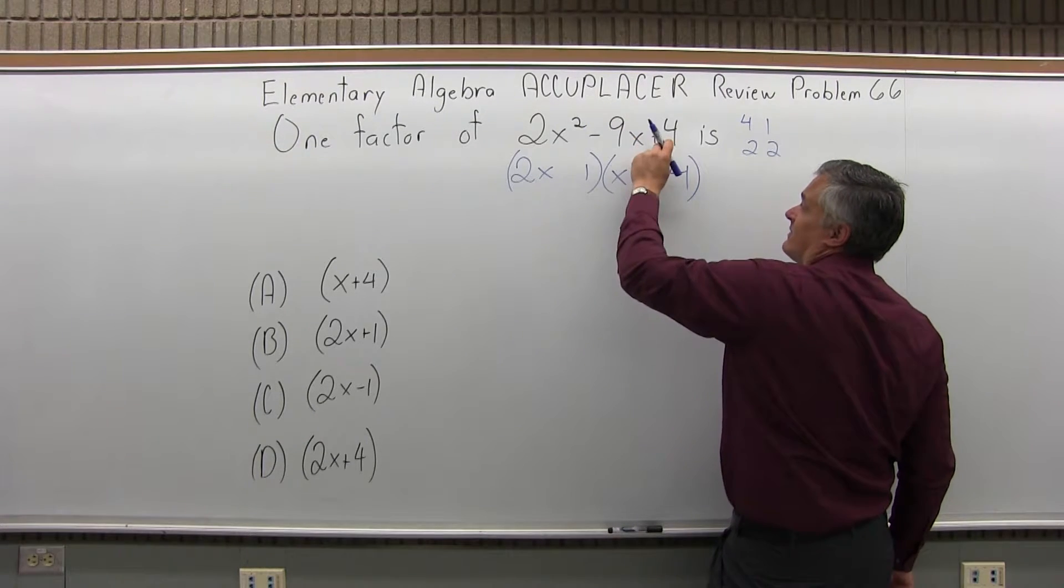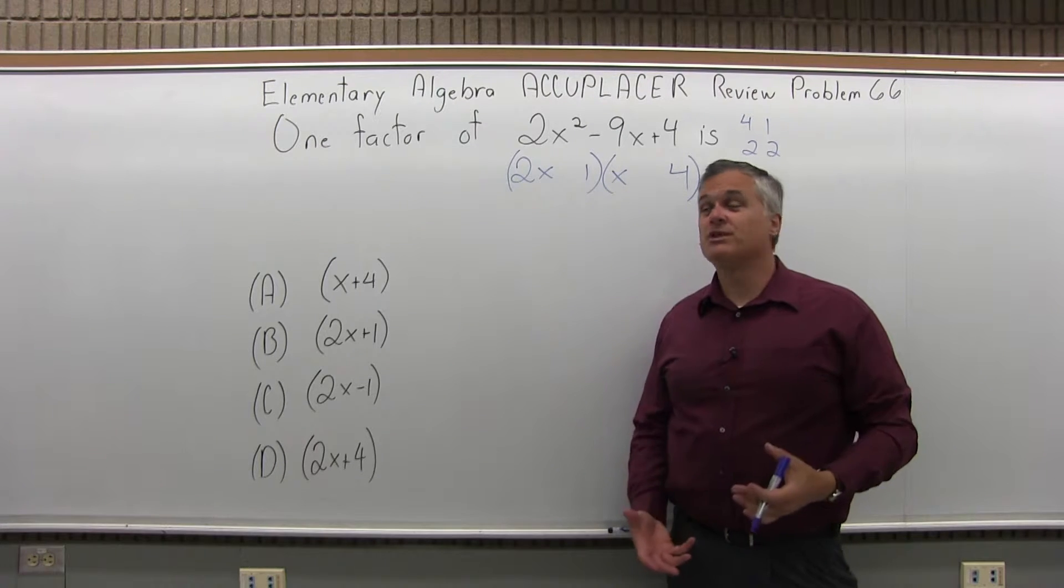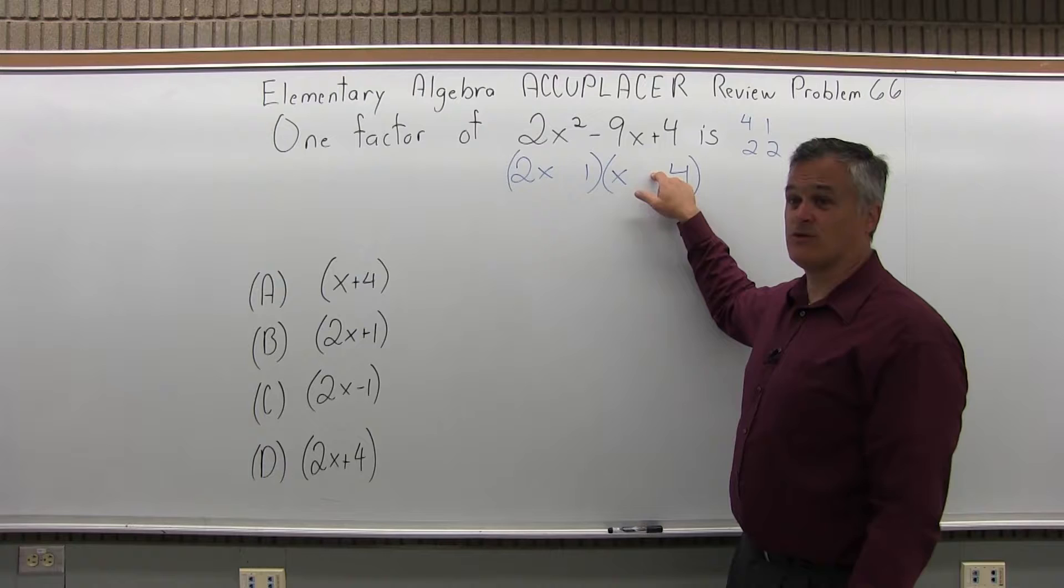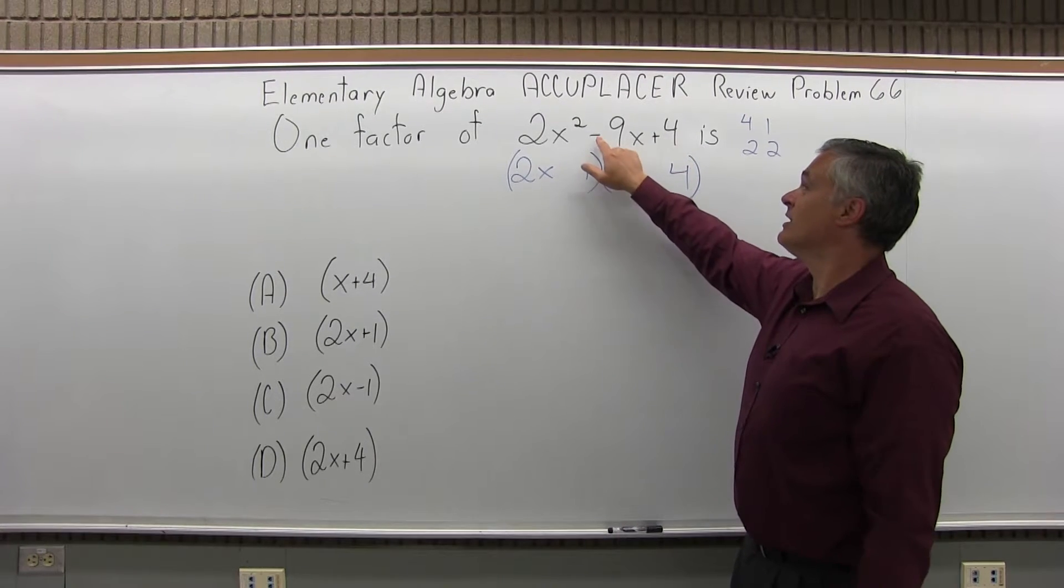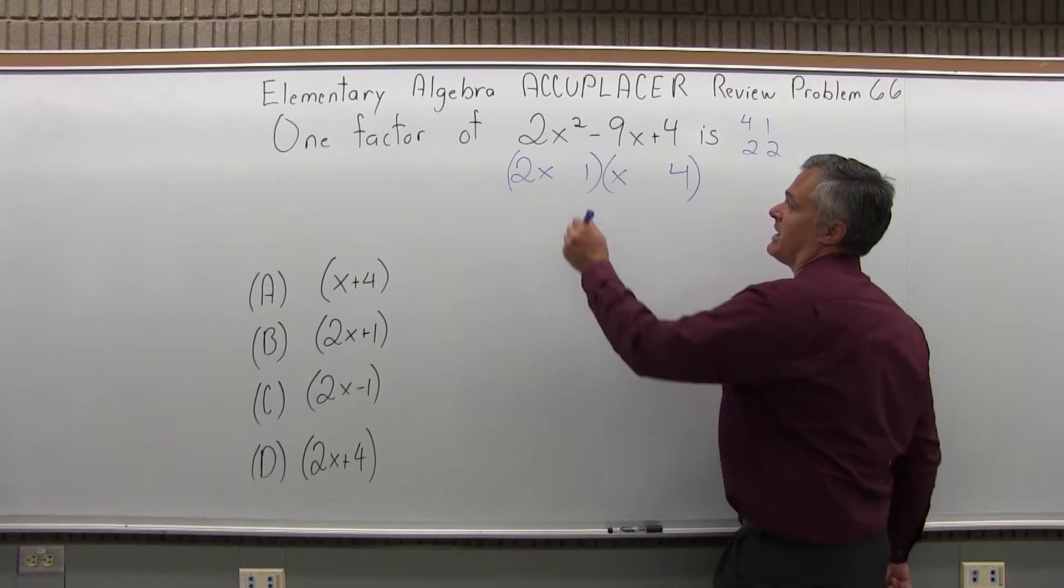Now as I look at the signs, the fact that the second sign next to the 4 is positive means I have both the same sign. It's either going to be plus 1, plus 4, or minus 1, minus 4. The fact that the middle sign next to the 9x is negative is telling me it's going to be minus minus.